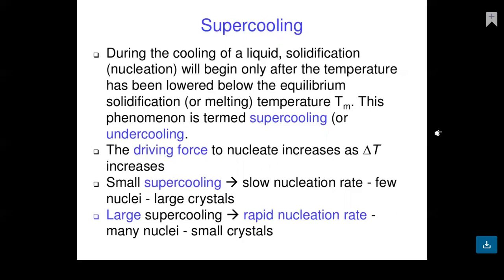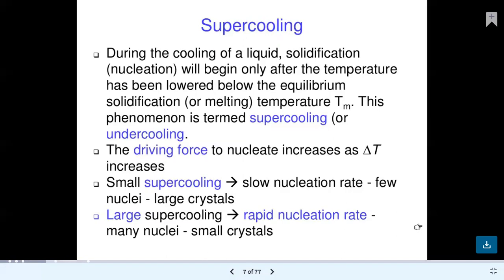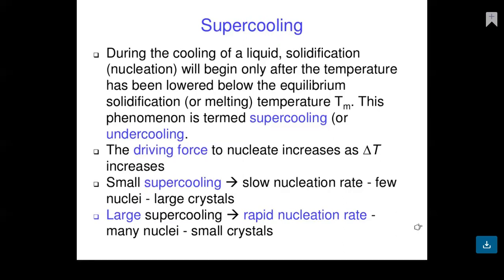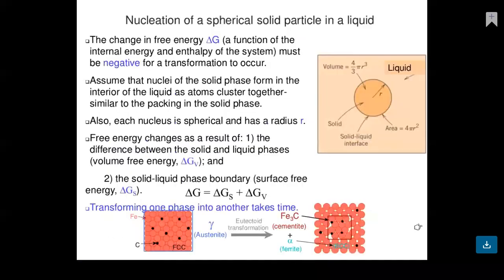Small supercooling gives a slow nucleation rate and few nuclei, resulting in large crystals. Large supercooling gives a rapid nucleation rate, many nuclei, resulting in small crystals. This is about supercooling.